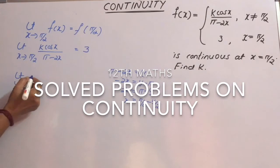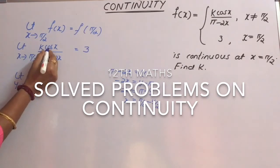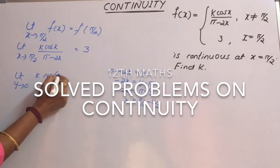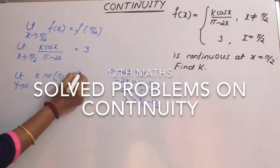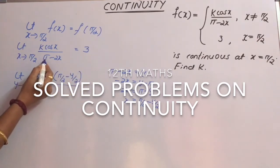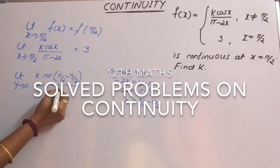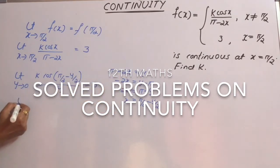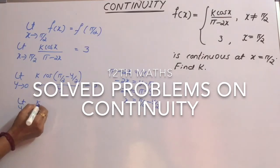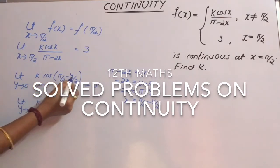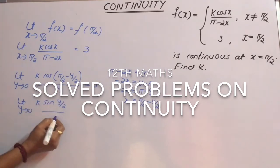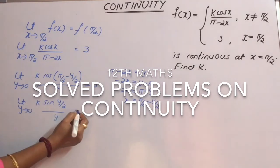So limit as y tends to 0: k times cos(x), where x is now π/2 - y/2, divided by y equals 3. Since cos(π/2 - y/2) = sin(y/2), this becomes: limit as y tends to 0 of k·sin(y/2) divided by y equals 3.